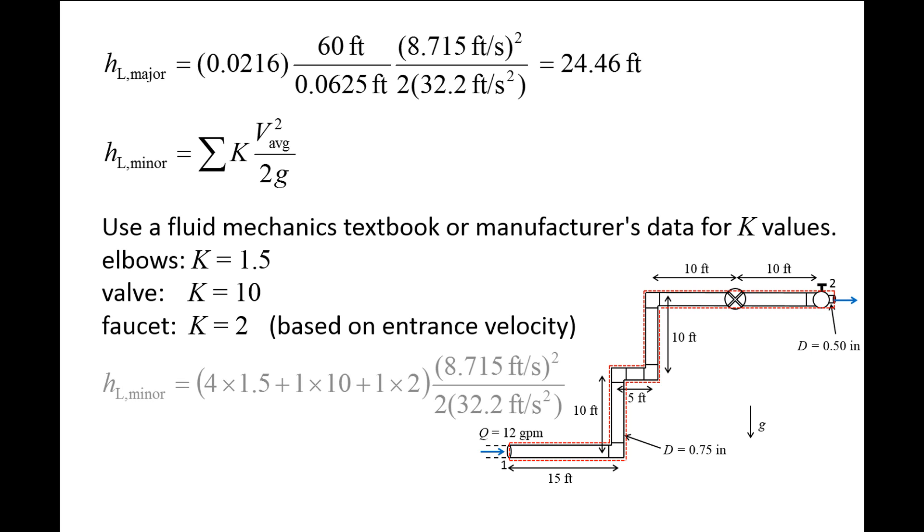We can now calculate the total minor head loss for this system. Since the same flow speed is used for all components, we can add up all the loss coefficients and multiply by the average speed squared over 2g, giving us a minor head loss of 21.23 feet.